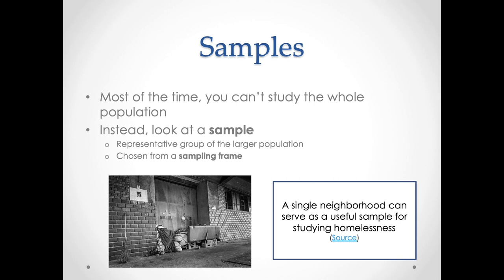Samples allow us to study things in ways that help us connect to the broader population. There are different logics that we can use, and the way in which we choose our sample is called a sampling frame — the ways in which we choose a group of people or a set of places in order to study. There are a variety of sampling frames.